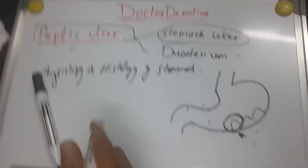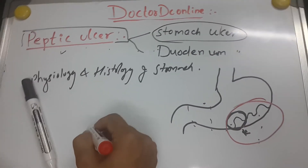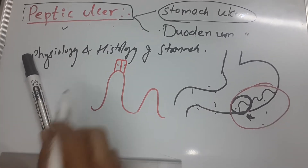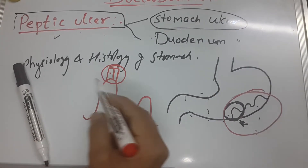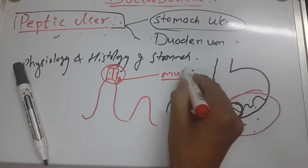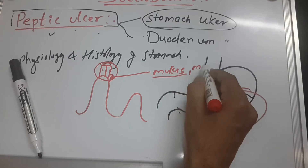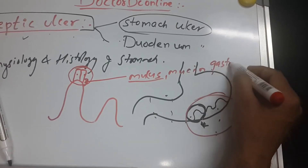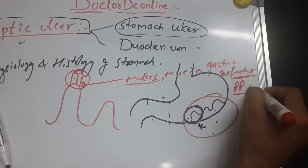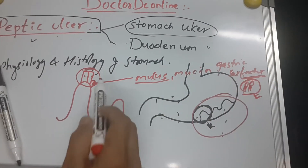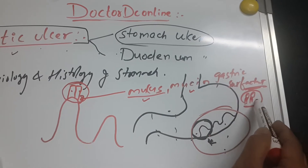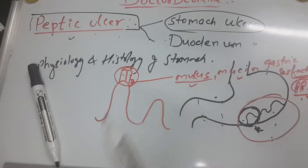The gastric pit is lined by columnar epithelium. Within the gastric pit, alongside the columnar epithelium, there are glandular cells. These glandular cells produce mucus, mucin, and gastric surfactant — which is mainly a phospholipid — and their main function is to serve as a protective barrier.